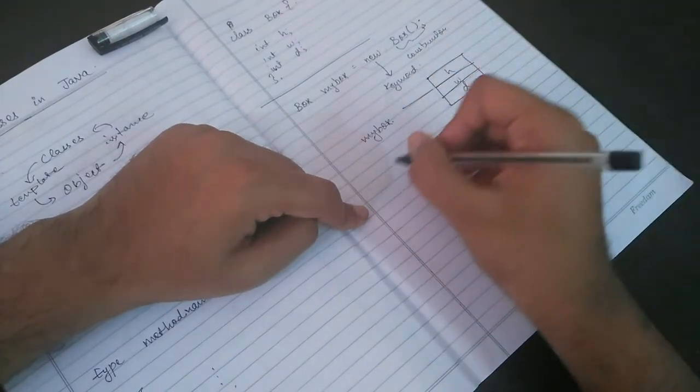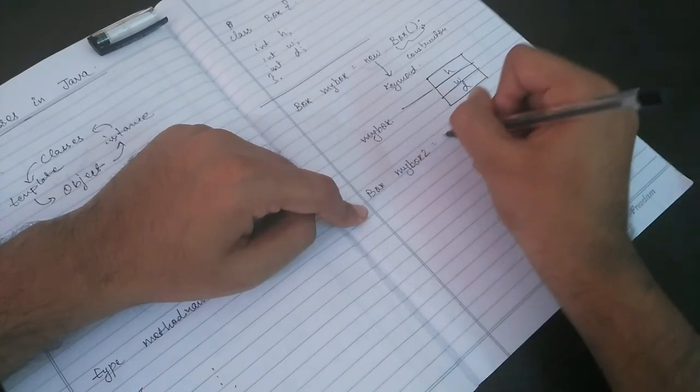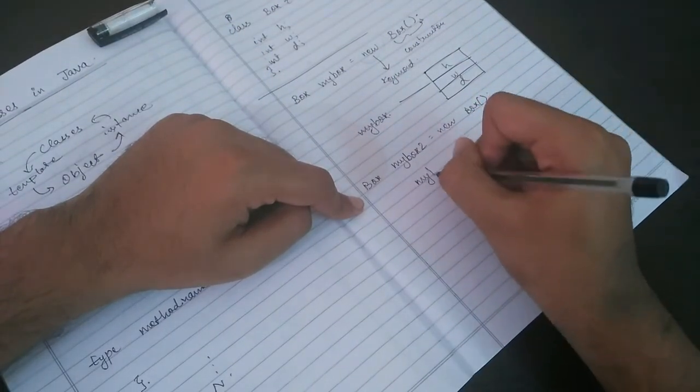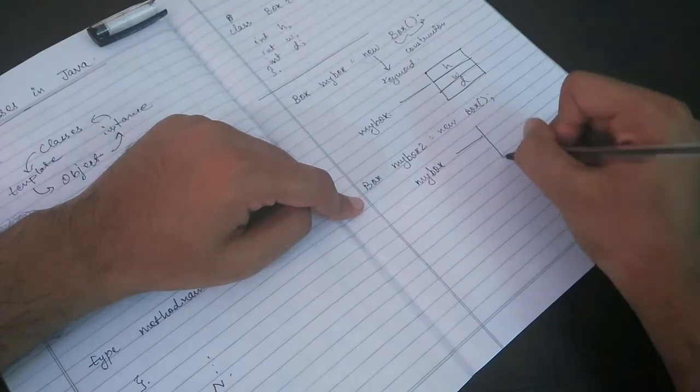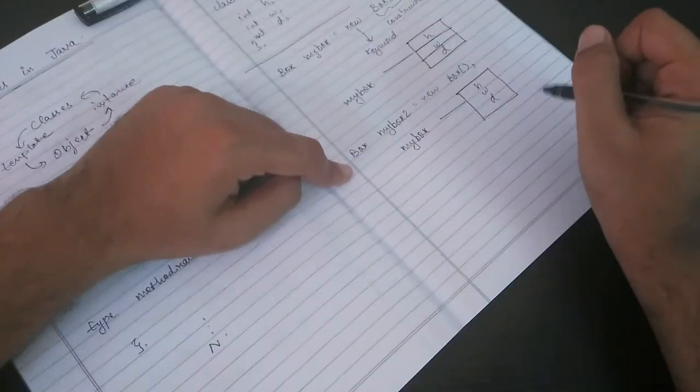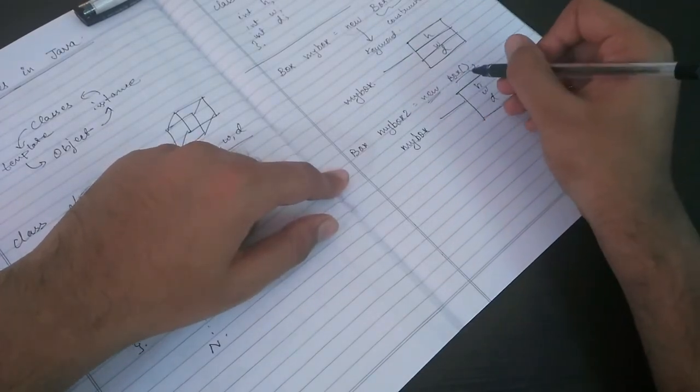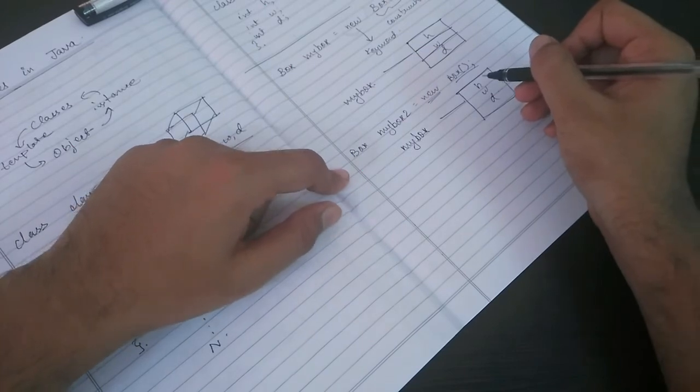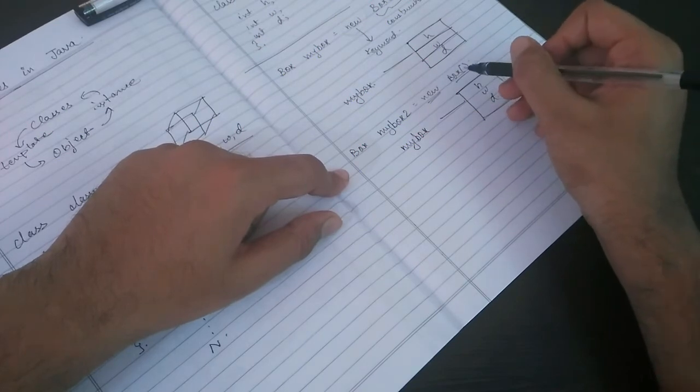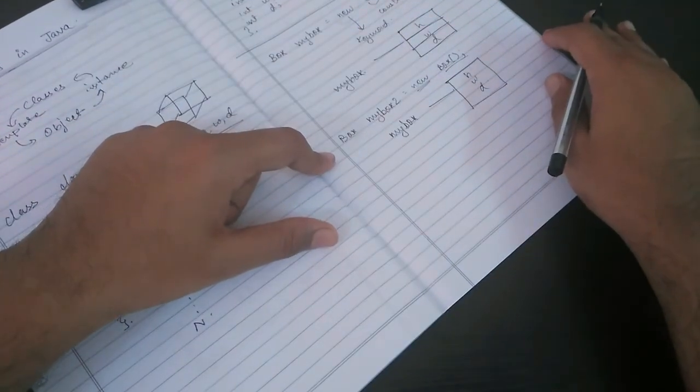And if you're creating one more object of this class, suppose myBox2, it will again create a separate memory. It will allocate a separate memory for all three instance variables. So this is what this 'new' keyword does. And this constructor is to fill the values. Now these values can be predefined, or when we learn constructors we will know that we can also pass the value, or some random value will be allocated by the compiler at runtime.